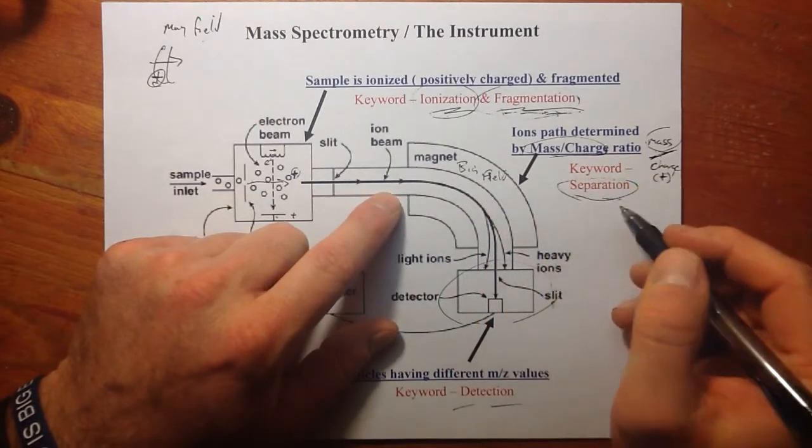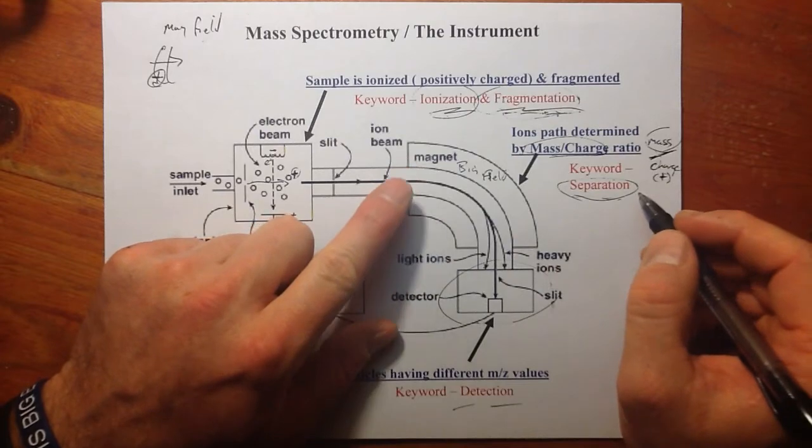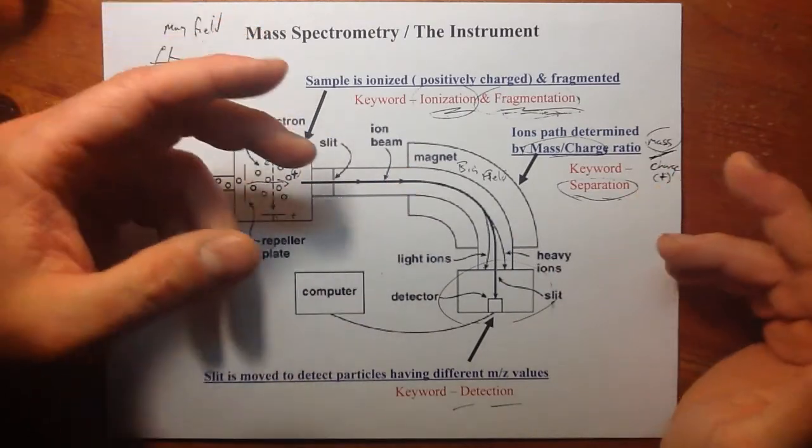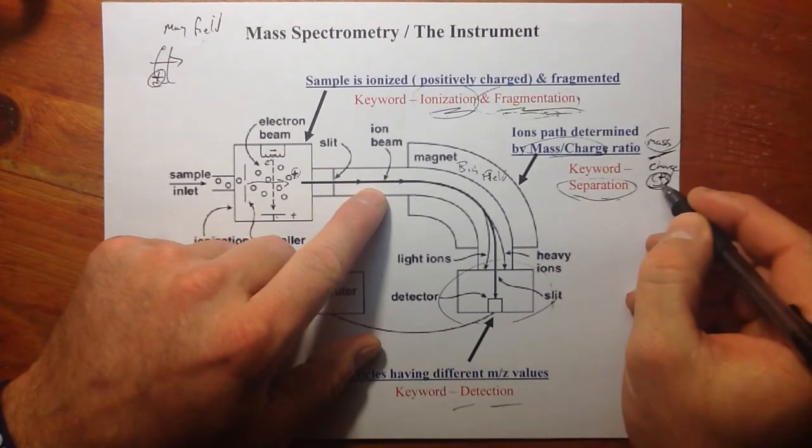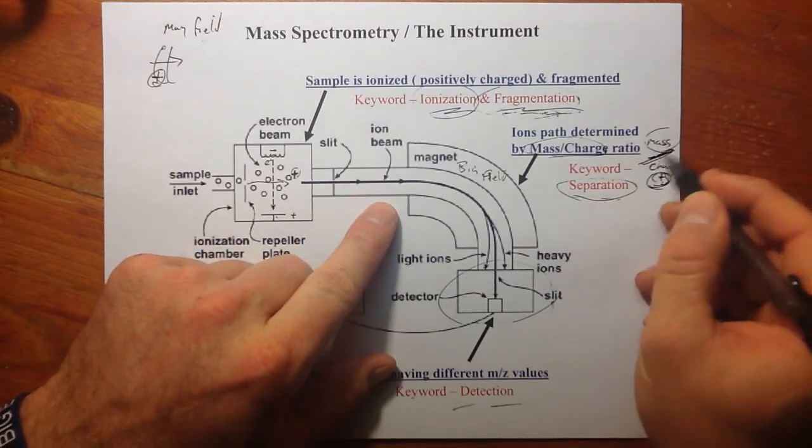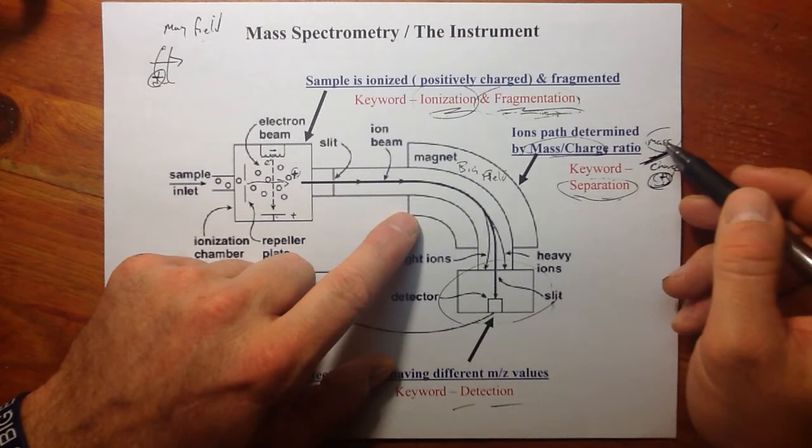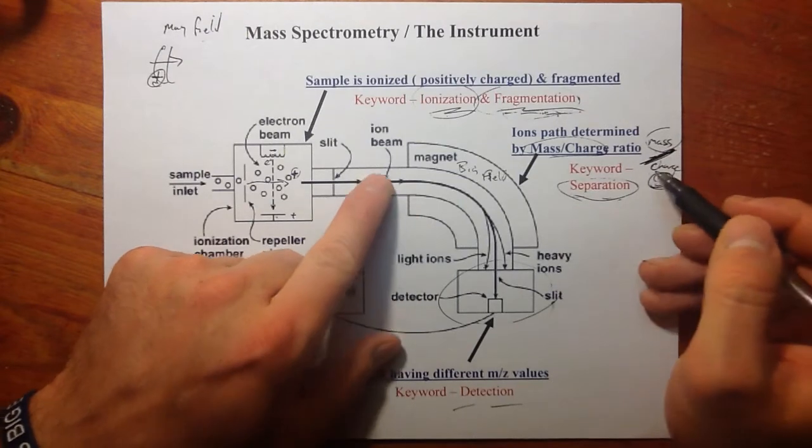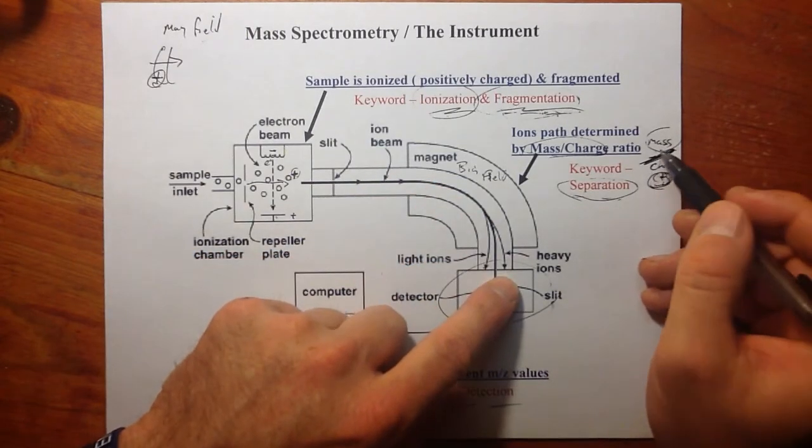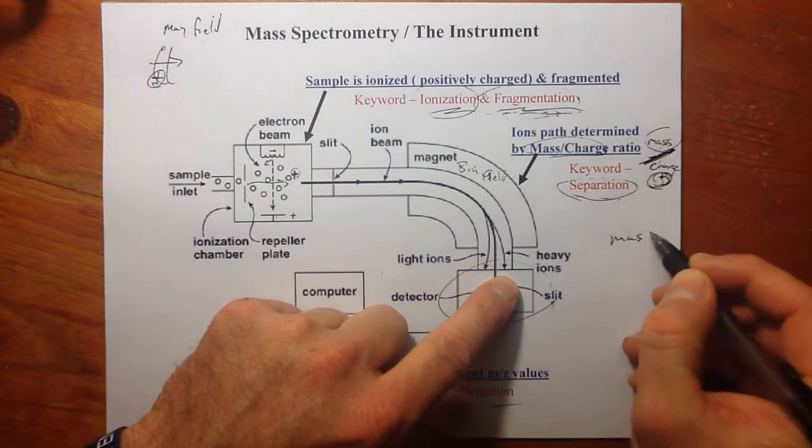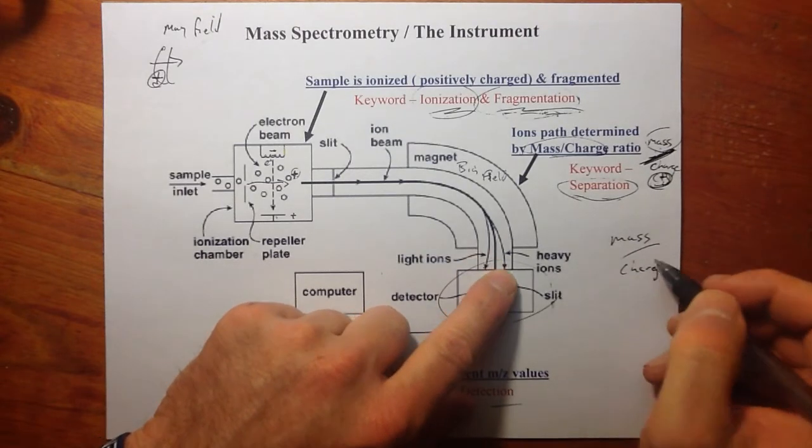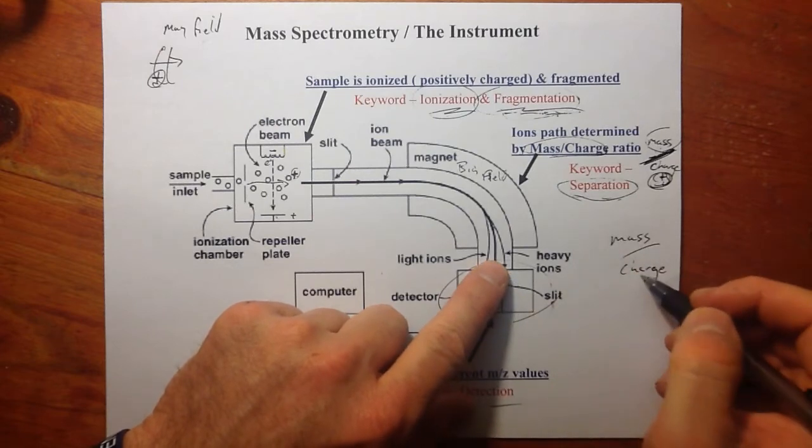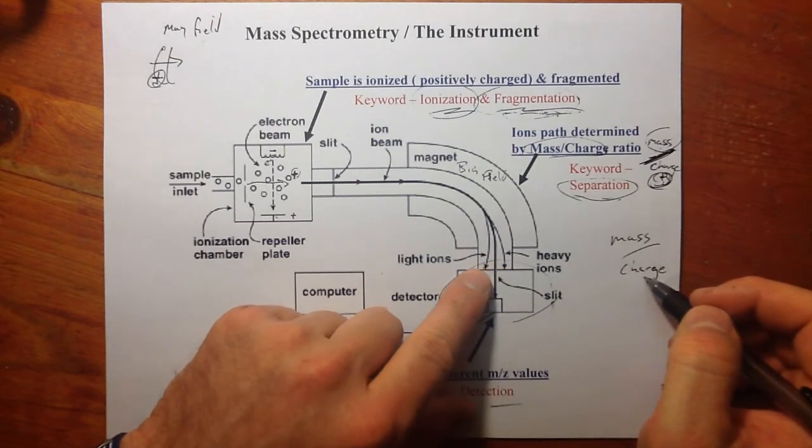The separation: we're going to assume that for most cases, or for most particles traveling through that are charged, they're going to have a plus one charge. And that charge, or mass to charge ratio, is what sets how much they bend. If the mass is very high, mass to charge, they're not going to bend as much.